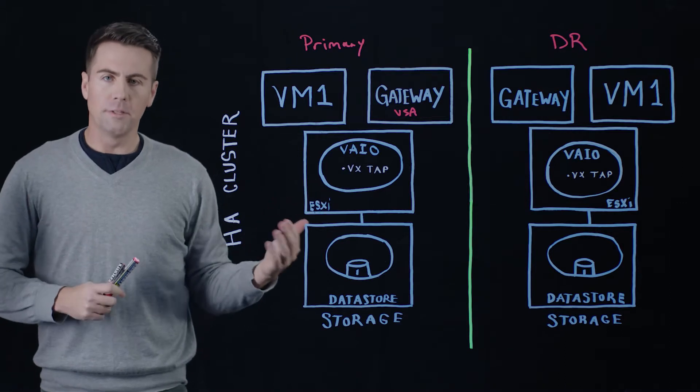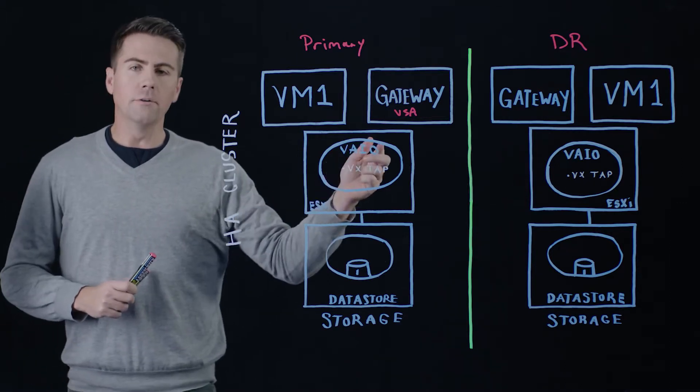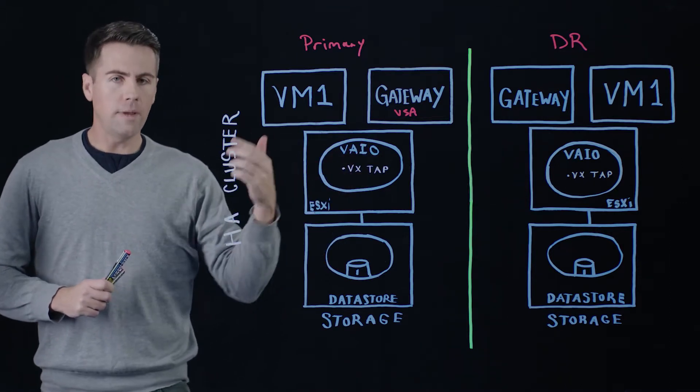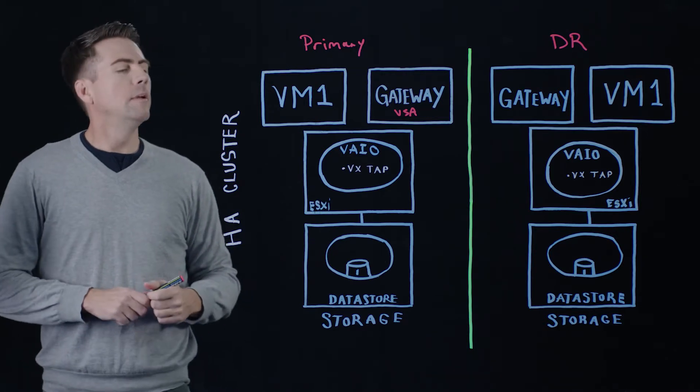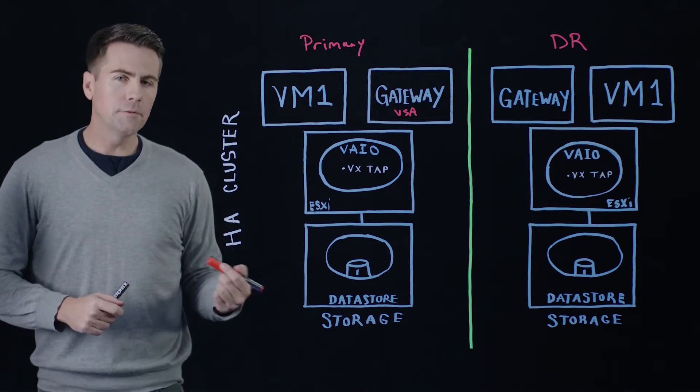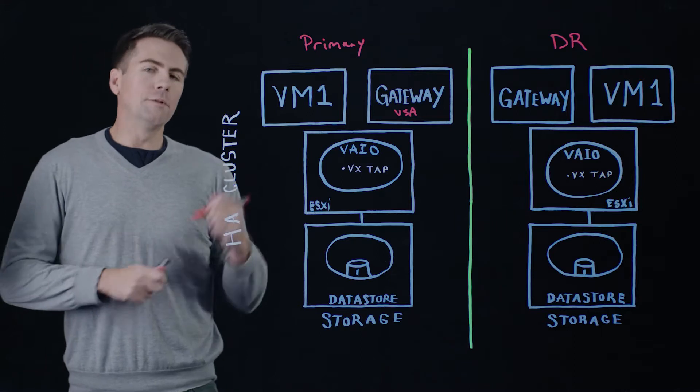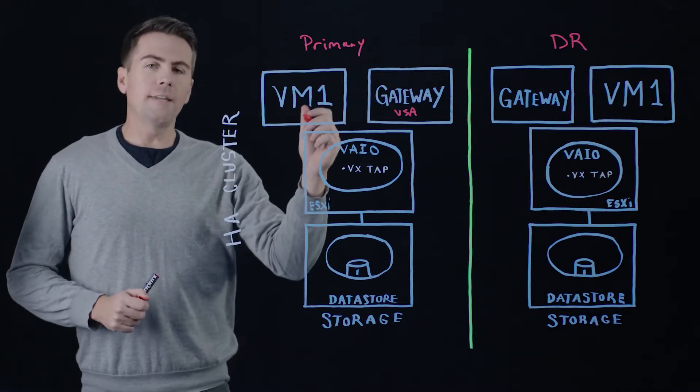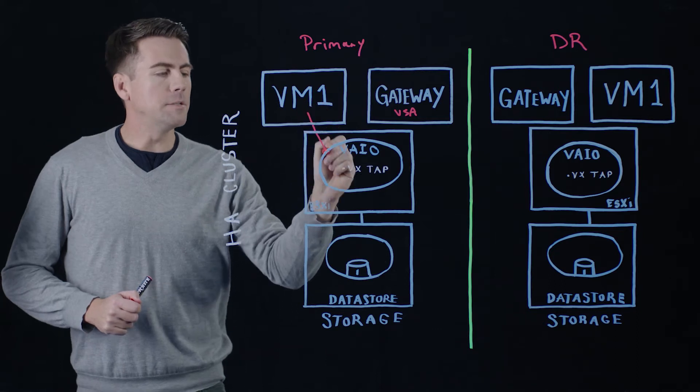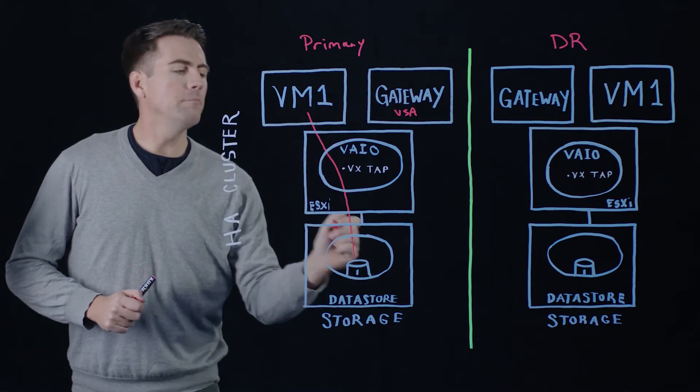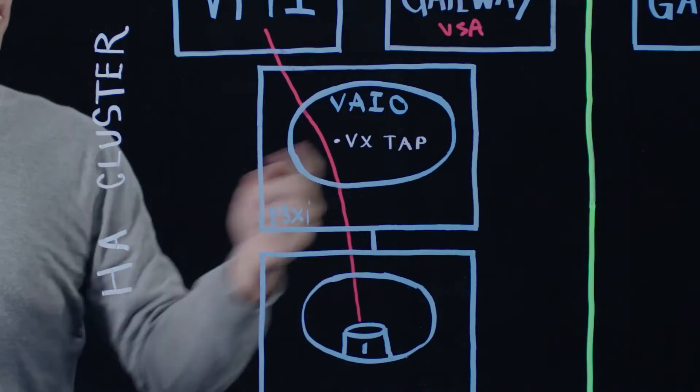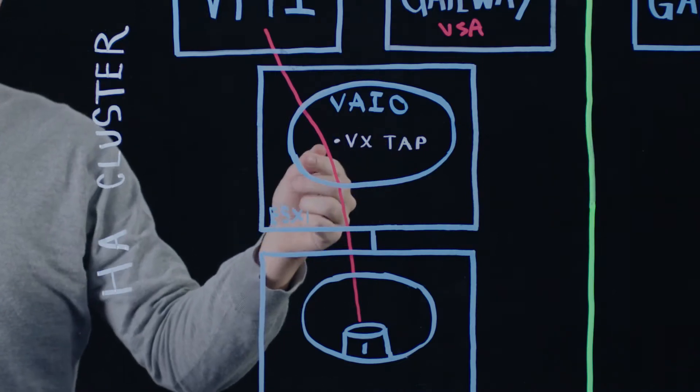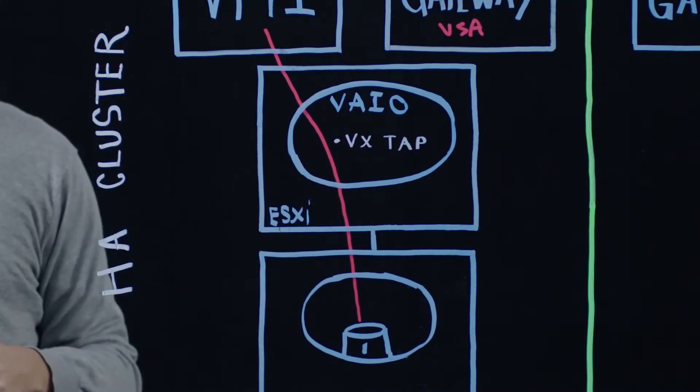The second thing that enables this whole process is called VIO. This stands for the vSphere APIs for IO filtering. This is an API recently introduced from VMware that enables third-party technology companies like Veritas to intercept IO as it's moving from a VM to its disk. The plugin that we install here at the hypervisor level is called Vxtap.